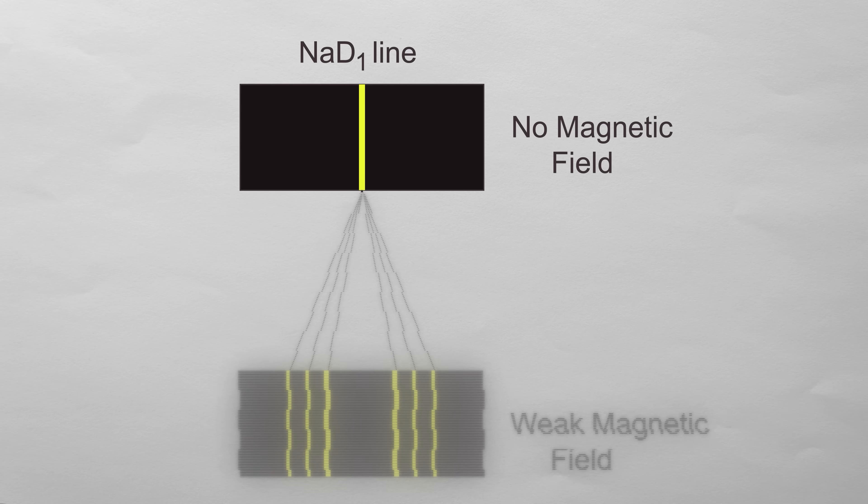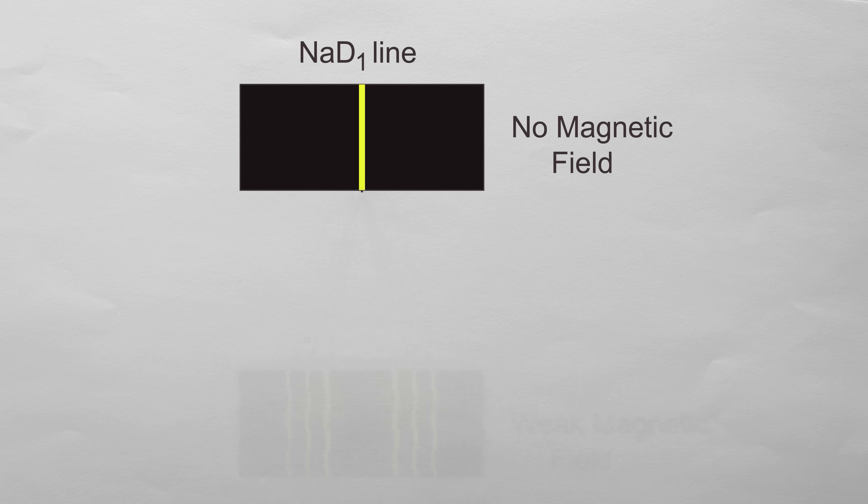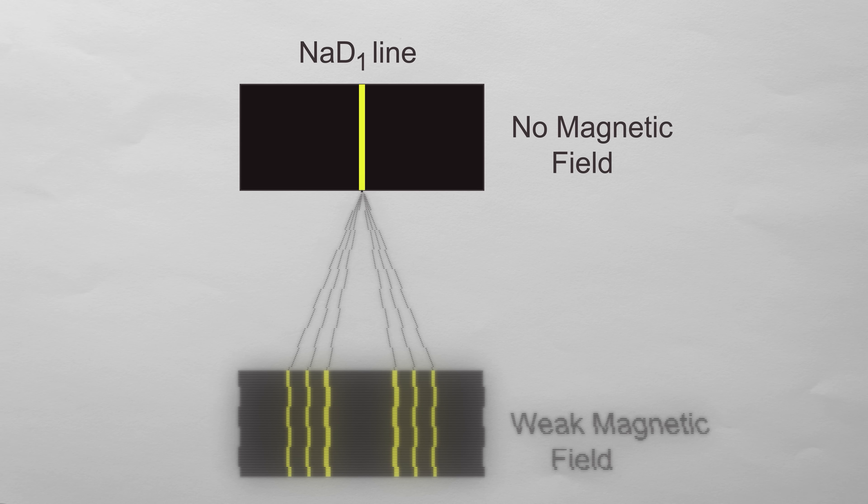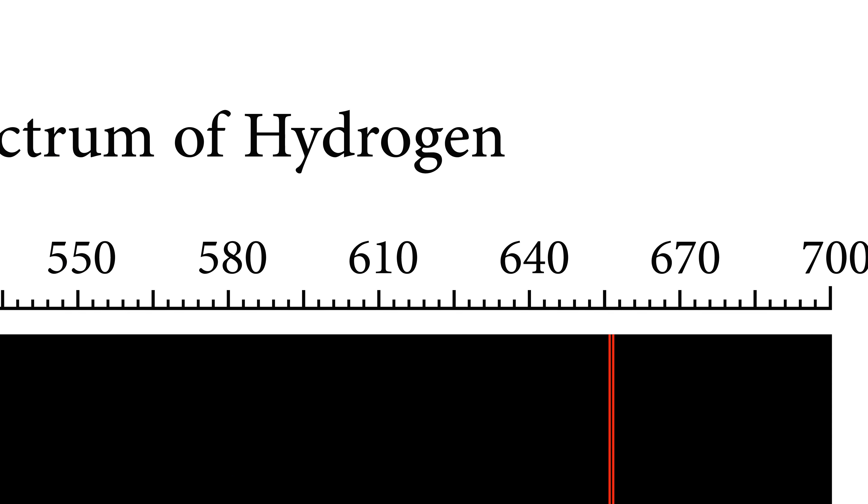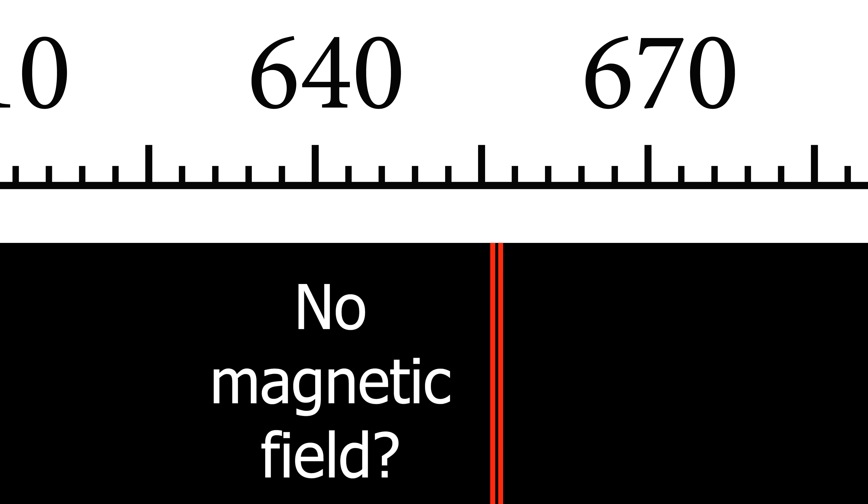They knew electrons orbited atoms. This explained why spectral lines split when an element was placed in a strong magnetic field. But what they couldn't explain was why even without an external magnetic field, the spectral lines of some atoms were already split.